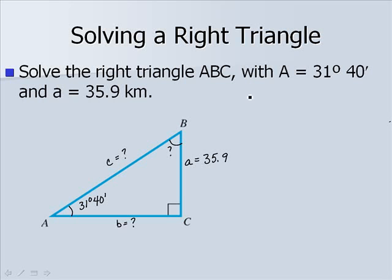First let's find angle B. We know that B and A are complementary, or they add up to 90 degrees, so angle B would be 90 degrees minus angle A, which is 31 degrees 40 minutes. We end up with a value of angle B of 58 degrees and 20 minutes when we do our subtraction.